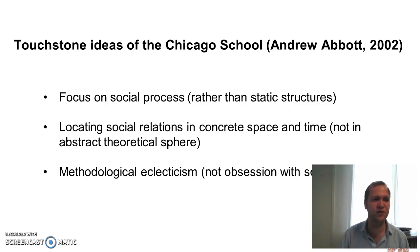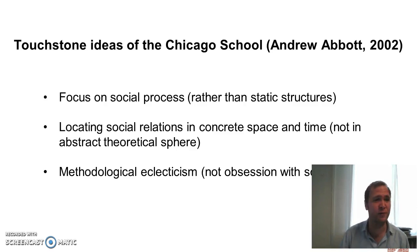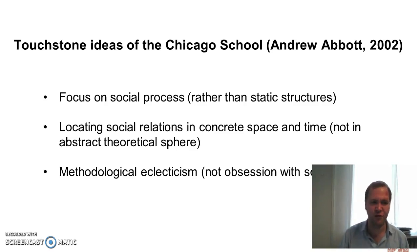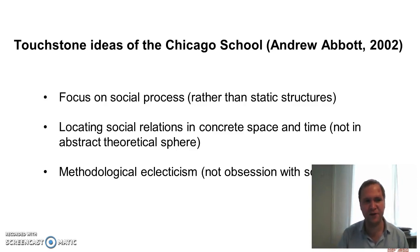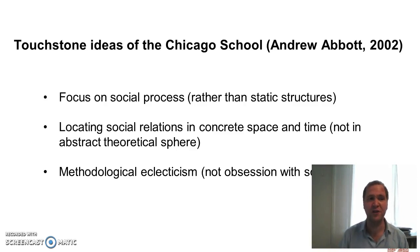Key to all of this was the school's deployment of urban ethnography, a method that allowed people like Robert Park, the mentor of the school, to capture, through first-hand acquaintance, the zest, the tingle, the excitement of urban reality, as Jackson says in reference to William James, the pragmatist philosopher and key inspiration for Park.